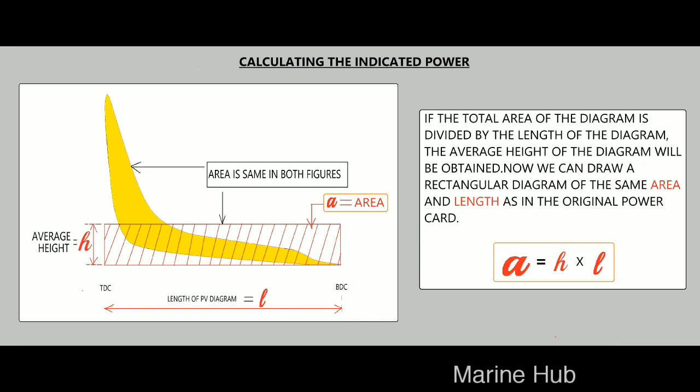If the total area of the diagram is divided by the length of the diagram, the average height of the diagram will be obtained. Now we can draw a rectangular diagram of the same area and length as in the original power card.